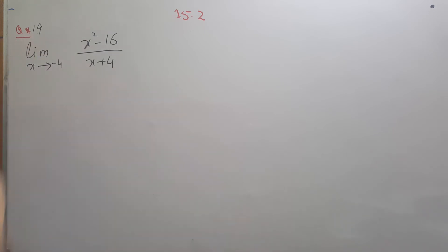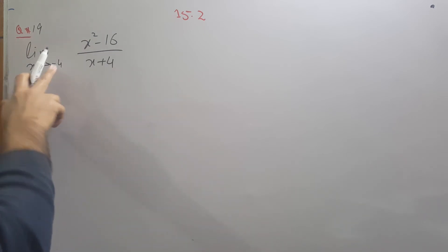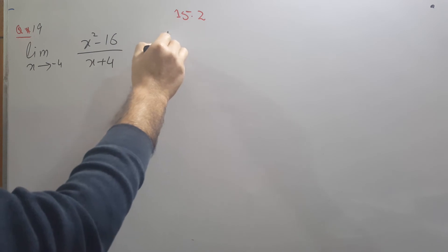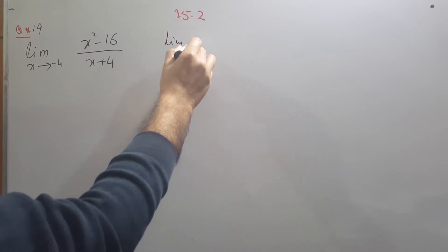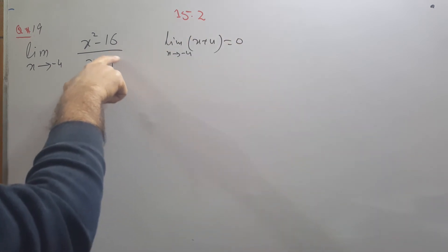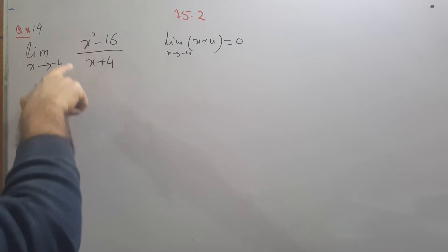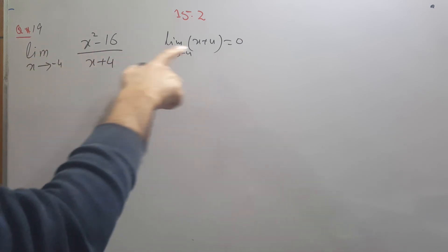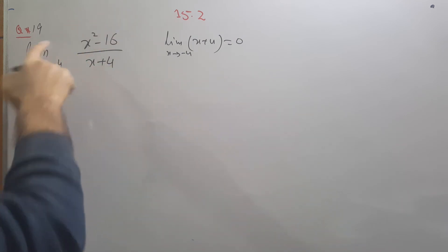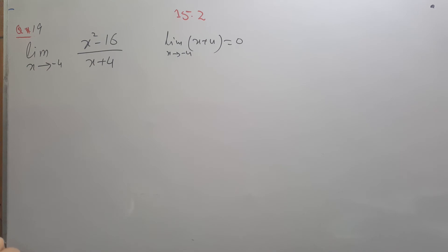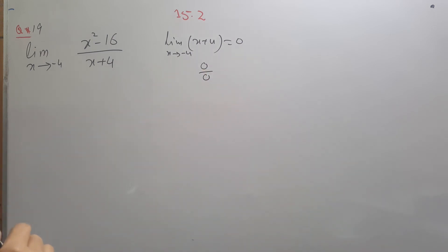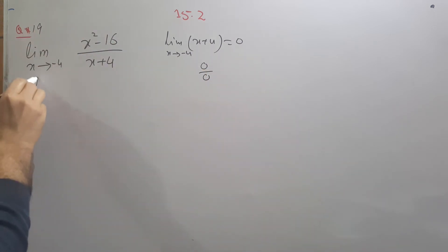For the next problem, if you put x equals minus 4 into the denominator, minus 4 plus 4 gives 0. This means the limit as x approaches minus 4 of (x plus 4) is 0 — the denominator is 0, so you cannot directly apply the limit above and below. You must check whether the function can be further simplified. If both numerator and denominator are 0, it means you can simplify further.